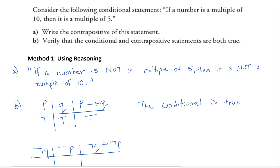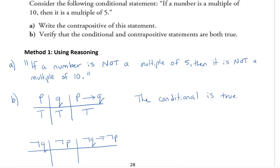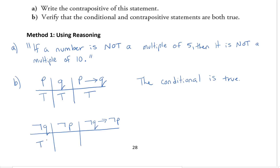Now looking at the contrapositive statement: if a number is not a multiple of 5, think of a number that's not a multiple of 5 — say 3, 11, or 27 — those are all numbers that are not multiples of 10. Is it also not a multiple of 5? Yes, that's true. So both the conditional and the contrapositive are both true.